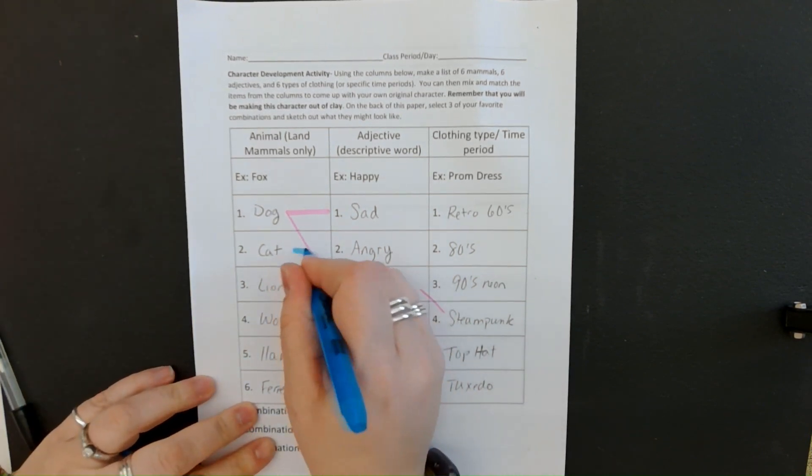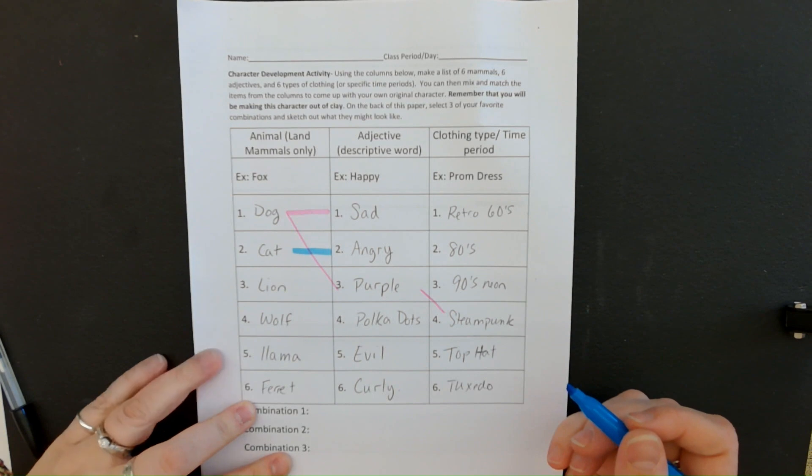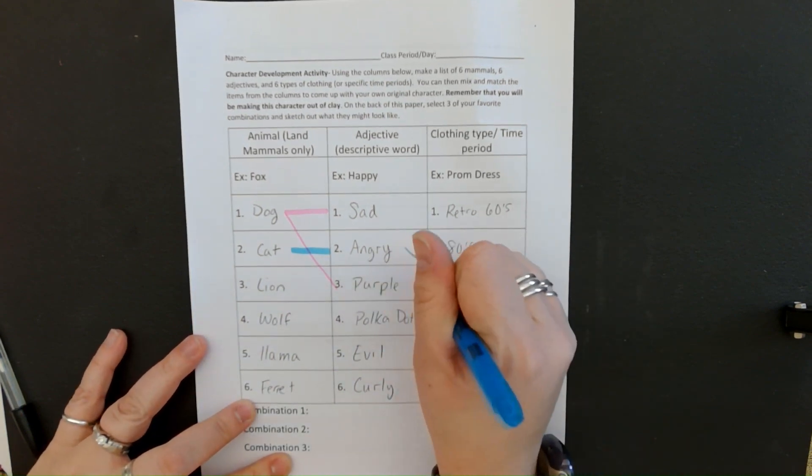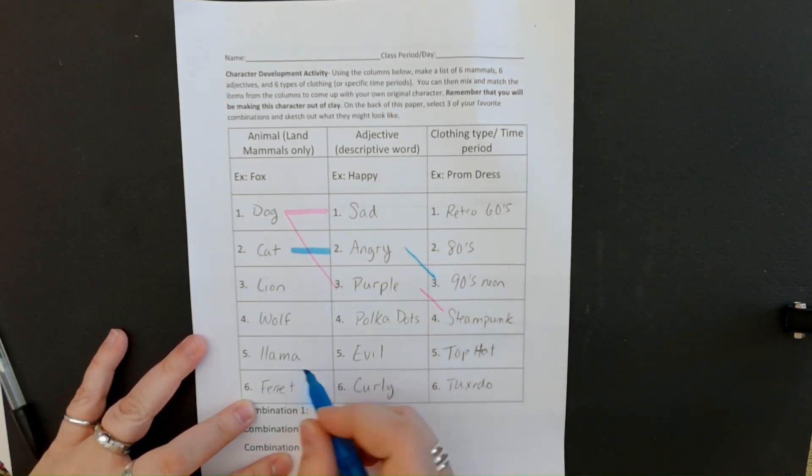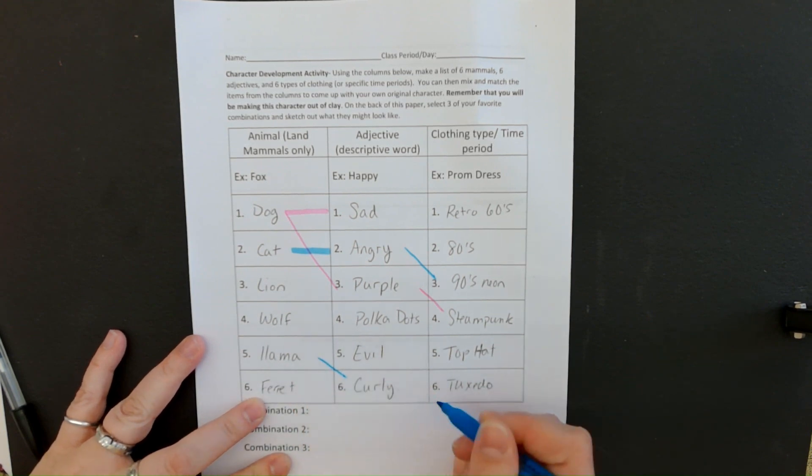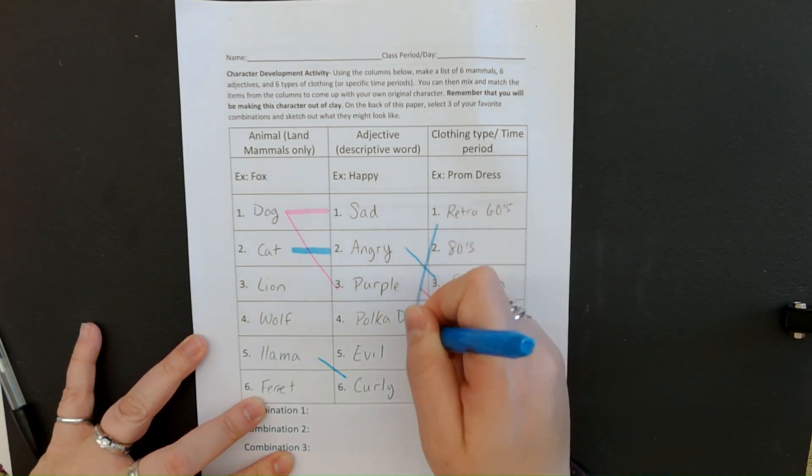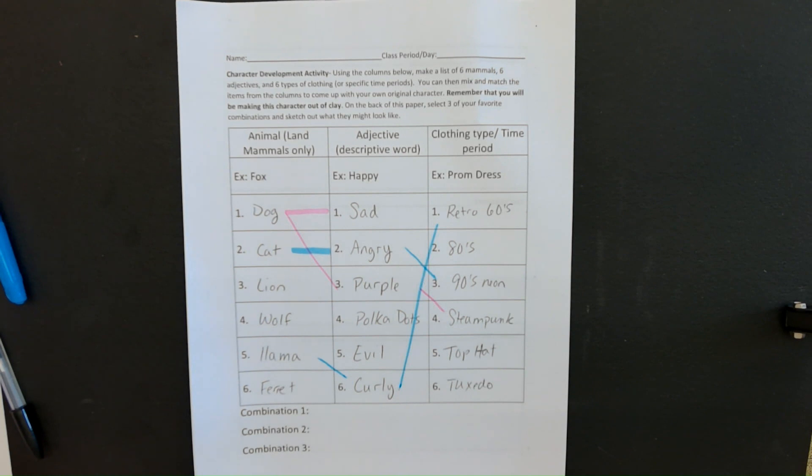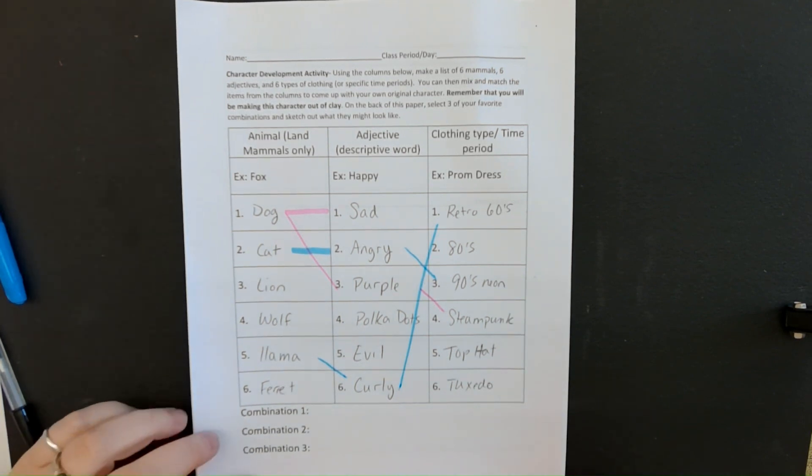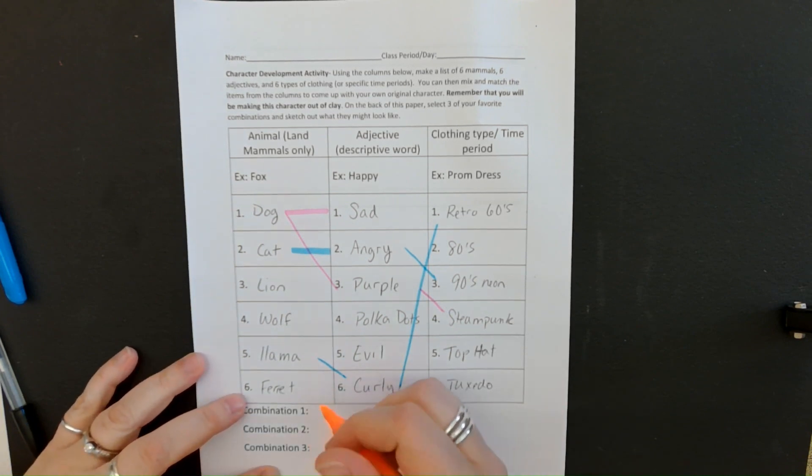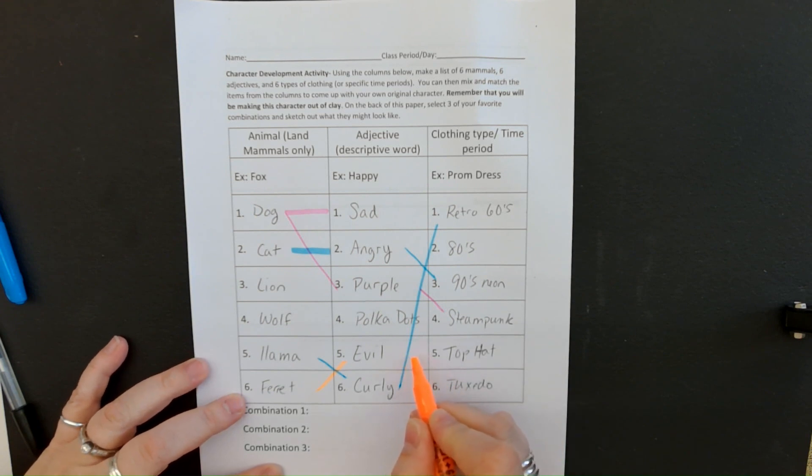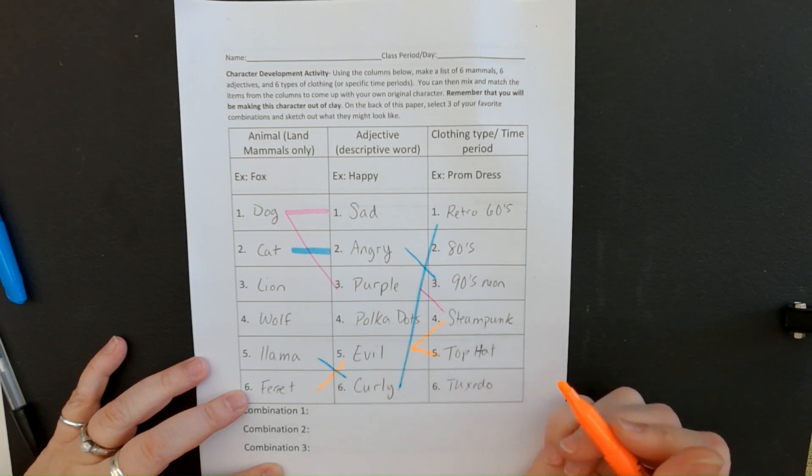So I can change my color or I can just try to keep track of what I'm doing. Maybe my cat is angry and then my angry cat is wearing 1990s neon. Maybe my llama has curly hair and maybe he's wearing retro sixties clothing. Maybe my ferret is evil and he's wearing a steampunk outfit with a top hat.